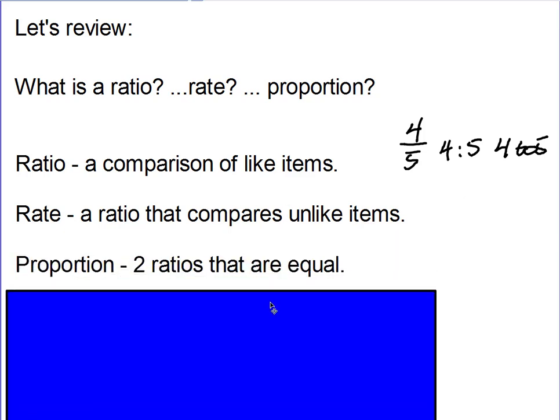And then a proportion is two ratios or two rates that are equal to each other. So this is what we use in order to find missing parts. If I know one ratio, gas is $2.15 per gallon, how much would it cost for 15 gallons? You could use a proportion to determine that.